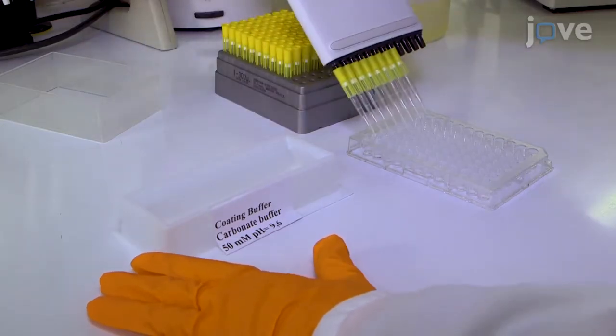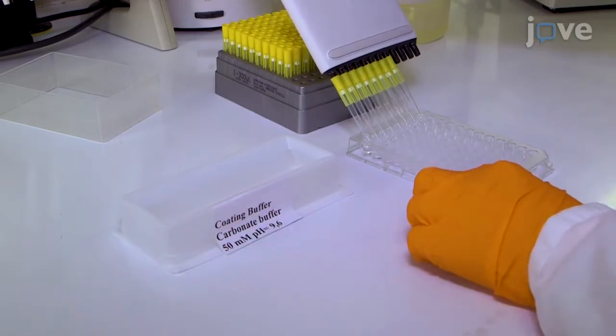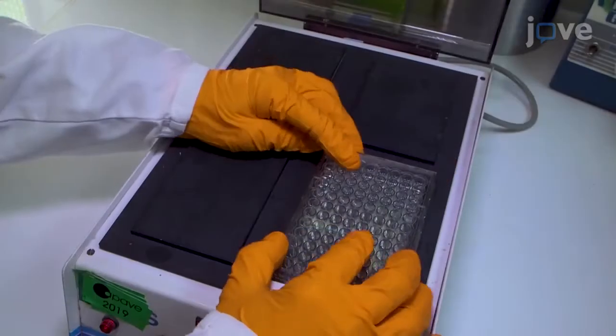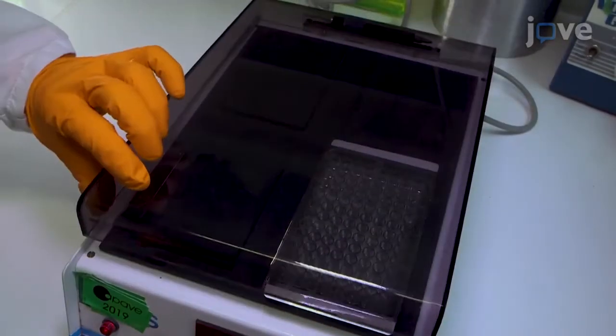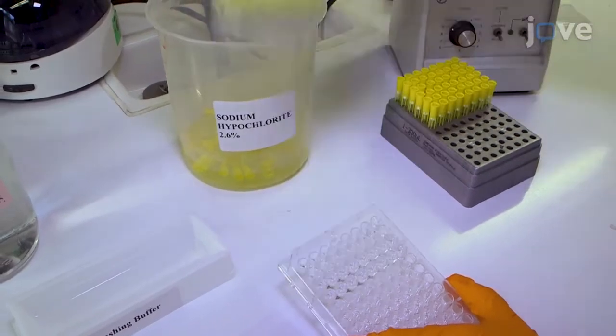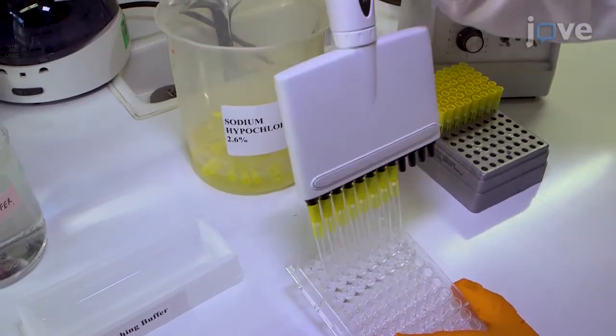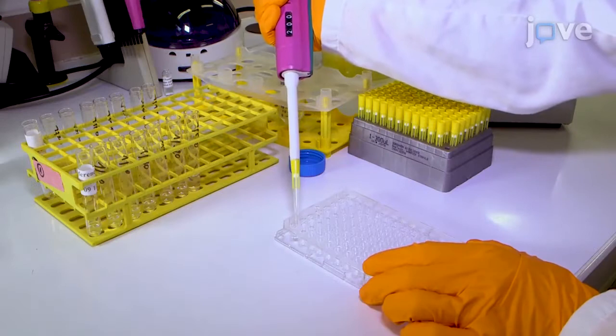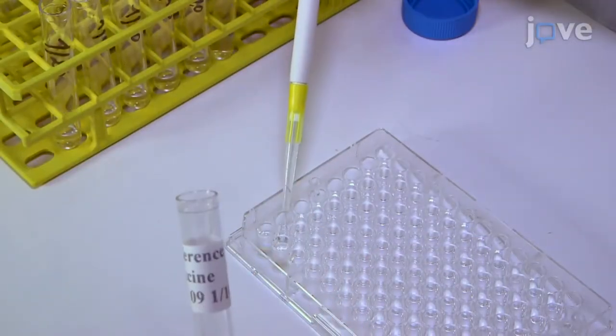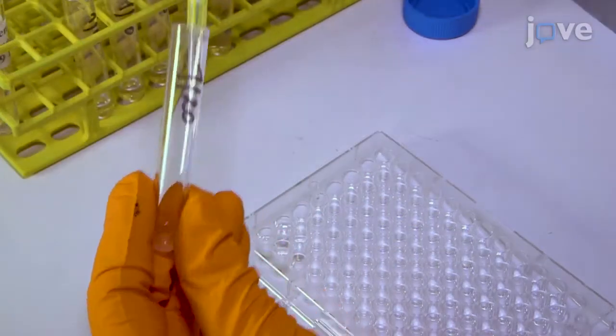This ELISA test shows a good concordance with the classical NIH test in recognizing the immunogenic form of the glycoprotein, shows a high sensitivity, and can be performed within only one day. Evaluation of rabies vaccine potency in vitro by ELISA is an alternative to the in vivo NIH test.